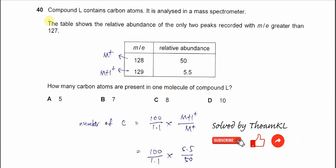Question 40. Compound L contains carbon atoms and is analyzed in the mass spectrometer. The table shows the relative abundance of the only two peaks recorded with M/e greater than 127 — the 128 and 129 values. The relative abundances are 50 and 5.5, so 128 is clearly the M+ peak and 129 is one extra mass unit, making it the M+1 peak.